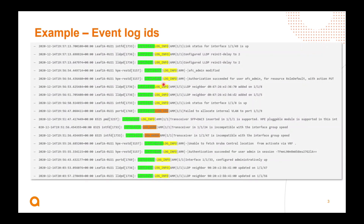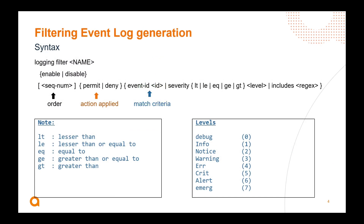This is what we'd find if we did a 'show events' in the CLI — we'd get this type of output. As you can see, we've got an event ID, unique IDs for specific events, and log info — that's the level. We've got a log error here, a log warn here, and also the content of each event. So we can filter on the event ID, the log level, and also some of the content within the log event itself, which makes it very flexible indeed.